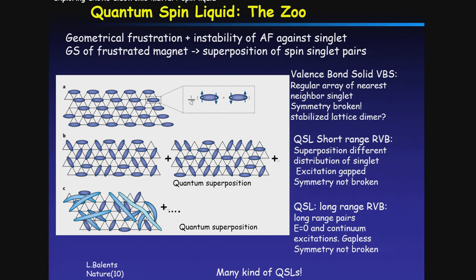Both short-range and long-range RVB are called quantum spin liquid because of the quantum superposition of singlet states. As you can see, you can have many different kinds of quantum spin liquid. So quantum spin liquid is not uniquely defined. This is kind of one of the most important viewgraphs of this morning.